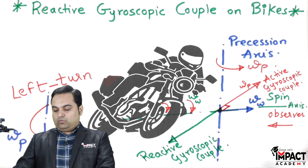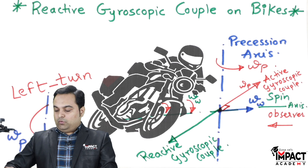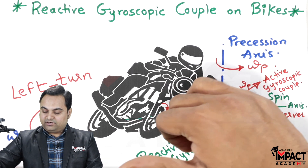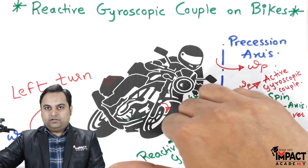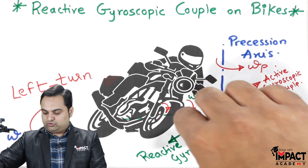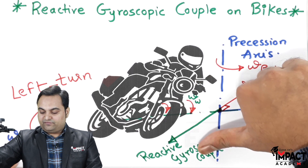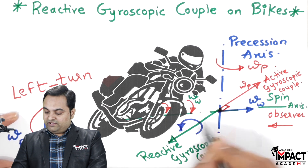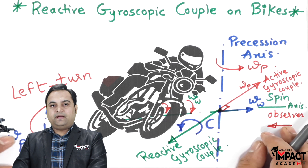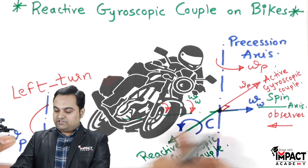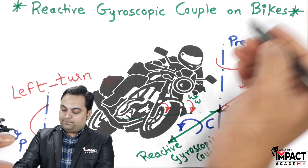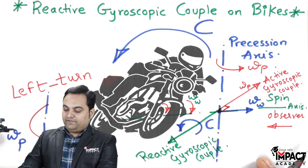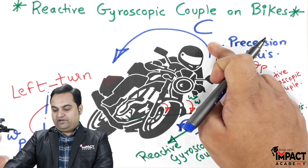Once we get the reactive gyroscopic couple, we match the thumb with its direction and the curling fingers show us the effect. The thumb is matched with the direction of the reactive gyroscopic couple, and the curling fingers give us capital C — the reactive gyroscopic couple. This capital C is then transferred onto the bike.